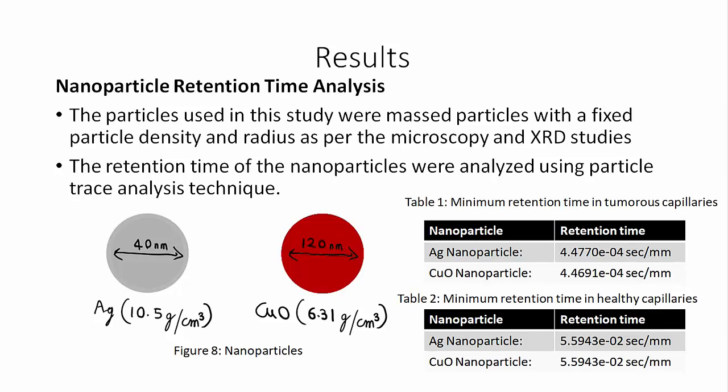We then performed nanoparticle retention time analysis to predict the time for a nanoparticle to reach the cell. We used mass particle analysis based on the radius obtained from XRD results. The mass particles were silver and copper oxide with density and radius as per the studies. The minimum retention time in tumor capillaries was found to be very short but was actually higher compared to healthy cell capillaries.